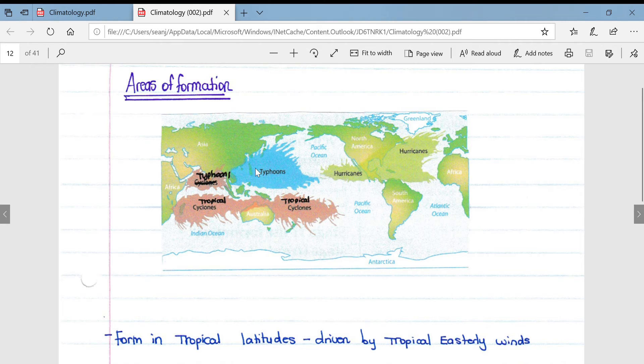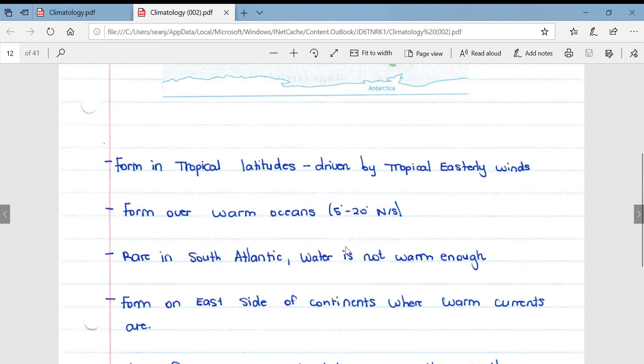If we just look briefly at the areas of formation, here is a nice map which illustrates the areas of formation. And you'll see that different names are given to tropical cyclones depending where they are found. So up around North America they are known as hurricanes, on the eastern side of Asia known as typhoons, and in the southern hemisphere they're known as tropical cyclones.